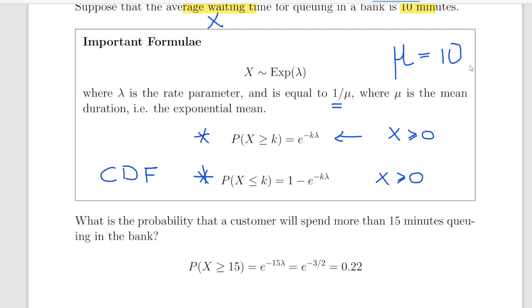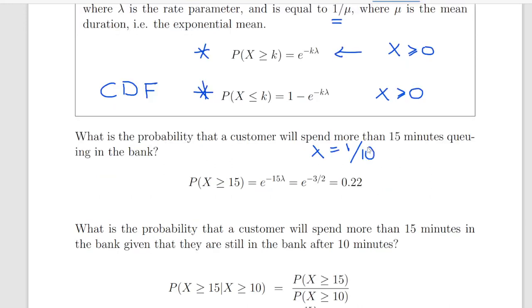That is the exponential of minus 15 times lambda, where lambda is equal to 1 over 10. So 15 times 1 over 10 is 3 over 2, essentially minus 1.5. So the exponential of minus 1.5, that gives us a probability of 0.22. So that's the answer to the first part of it there.